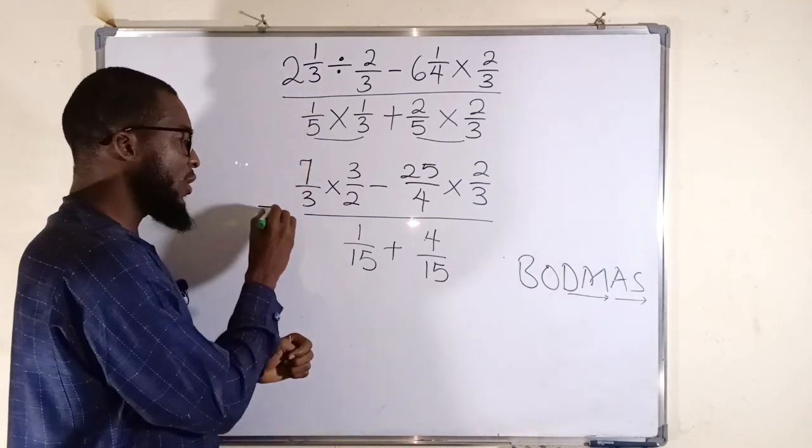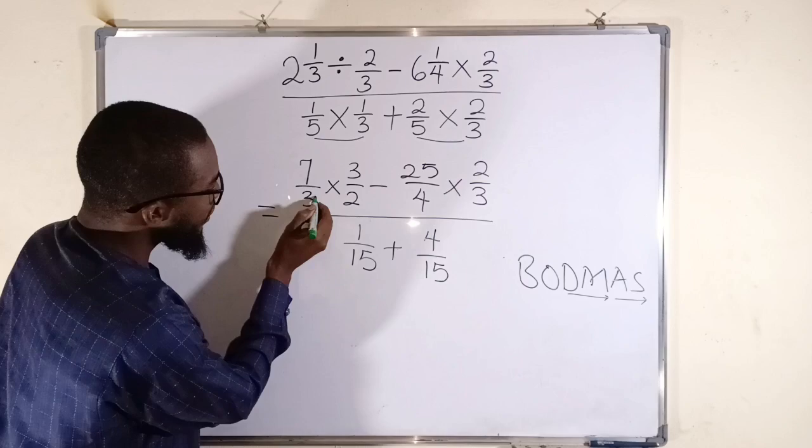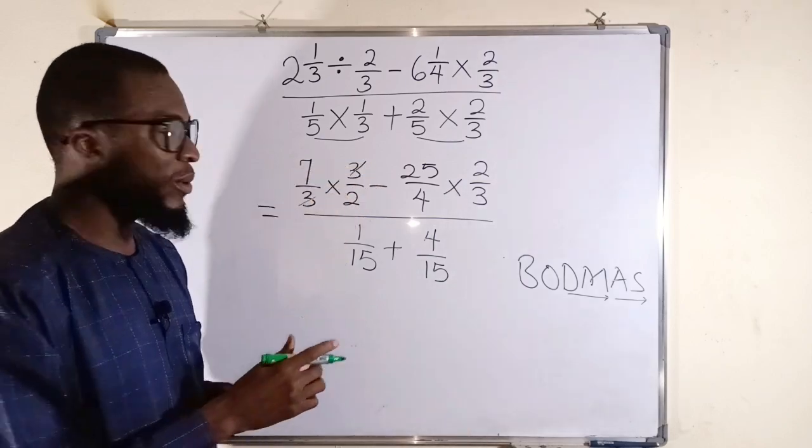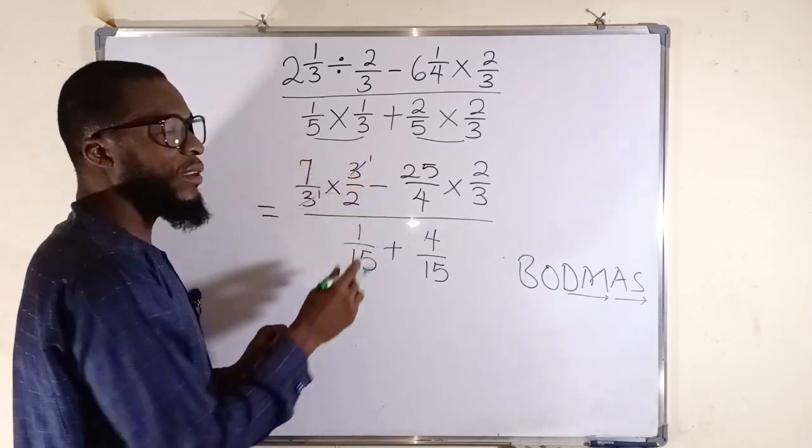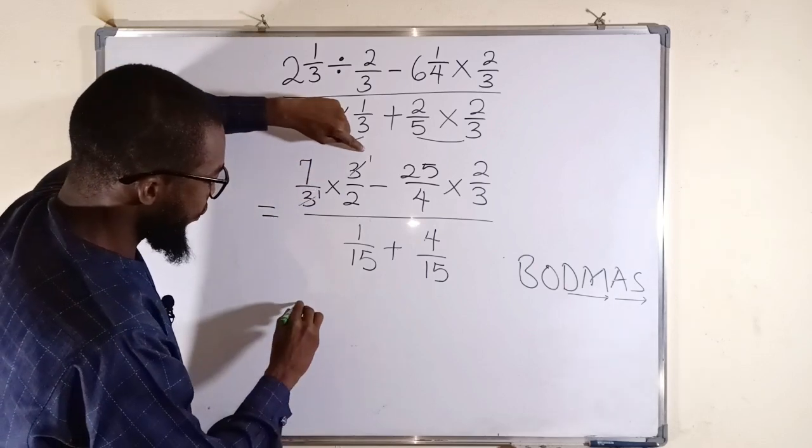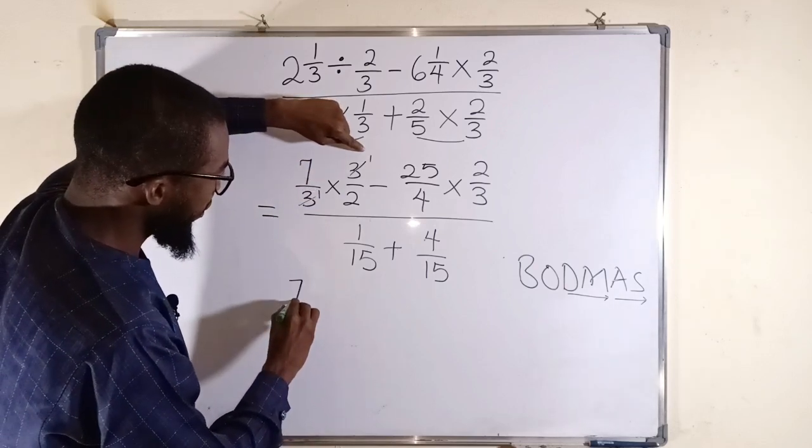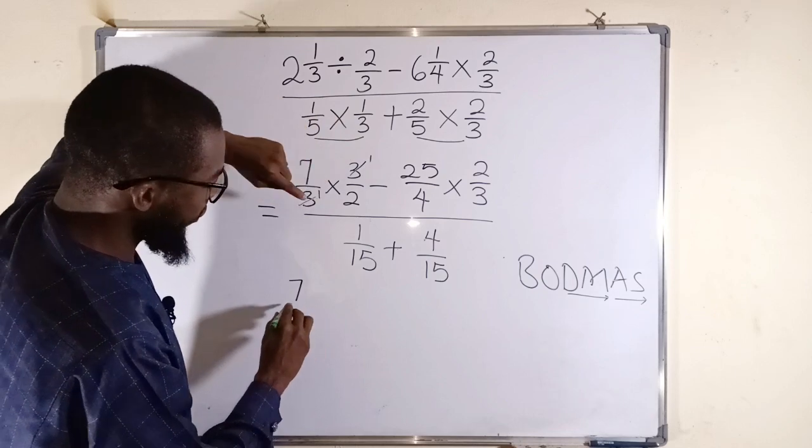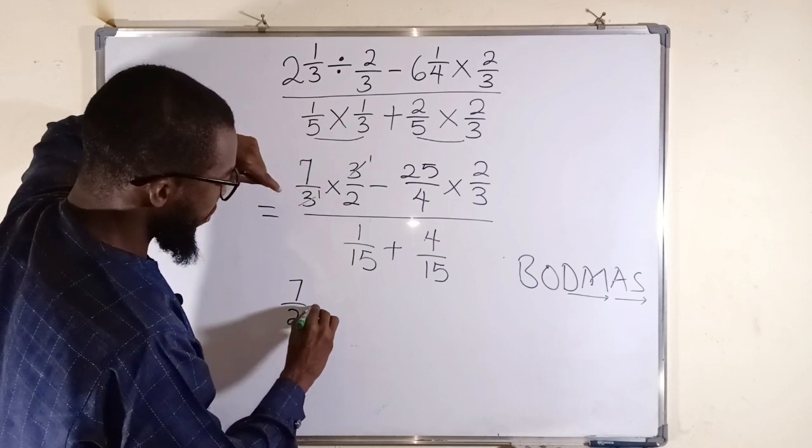Let's go back to the numerator again. You can see that this 3 and this 3 can always cancel because they can go into each other one time. So to the top, we only have 7 times 1, which is 7 divided by 1 times 2, which is 2. Then minus.